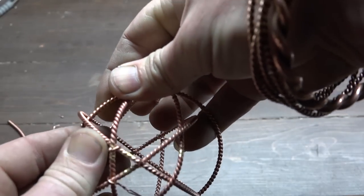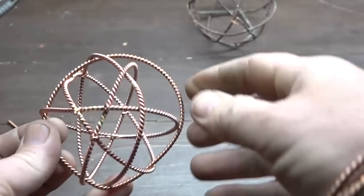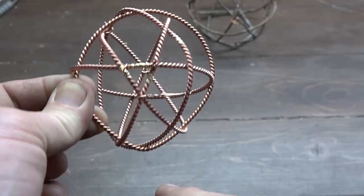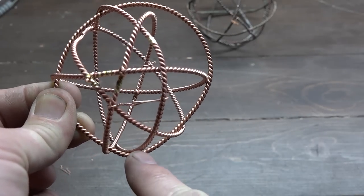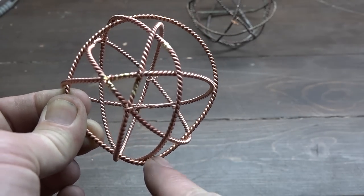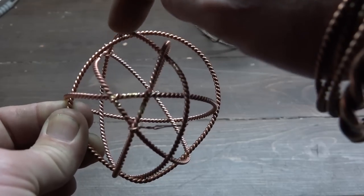And notice that the over-under pattern is not in reference to the entire sphere as of yet. Rather, the over-under pattern is just the intersection of two rings.